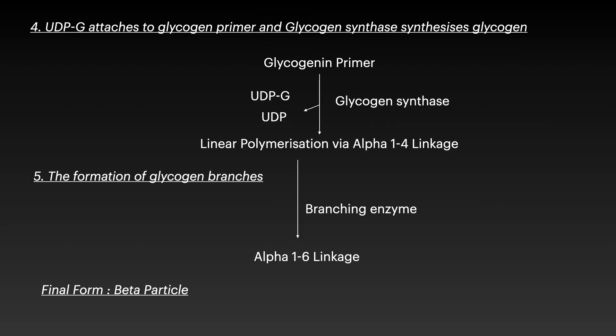The glycogenin primer, which has tyrosine residues, is attacked by UDP glucose, attaching glucose to it. With the help of the enzyme glycogen synthase, the reaction continues via linear polymerization through alpha-1,4 linkages, adding linear glucose units onto the glycogenin primer. Then branching enzyme — alpha-1,4 to 1,6 glucan transferase — forms alpha-1,6 branches, and the final product is the beta particle.